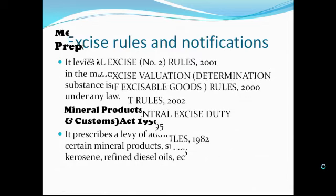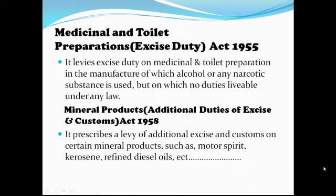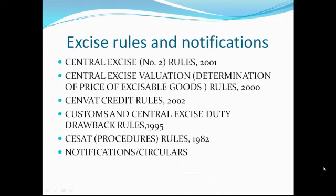The last act under this heading is the Mineral Products (Additional Duties of Excise and Customs) Act, 1958. It prescribes a levy of additional excise and customs on certain mineral products such as motor spirit, kerosene, refined diesel oils, unspecified diesel oil, furnace oil, naphtha, and bitumen, etc. Next, Excise Rules and Notifications: besides the acts, there are rules and notifications of the Central Government for proper administration of Excise and Customs Law. The rules are required to be placed in both Houses of Parliament for a period of 30 days, comprised in one or more successive sessions of the Legislature. The effect of such rules and notifications will be subject to approval by the two Houses, but without prejudice to anything done prior to the approval.